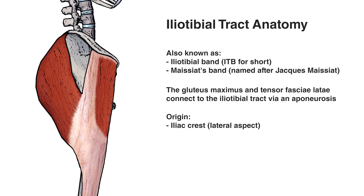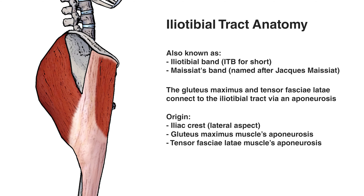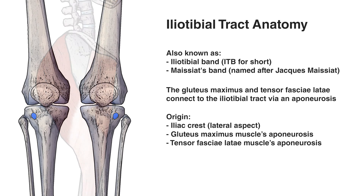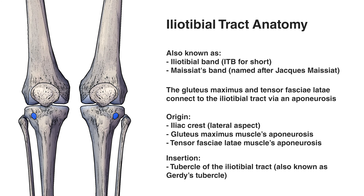In addition to the iliac crest, the iliotibial band also connects to the gluteus maximus muscle and the tensor fasciae latae muscle via an aponeurosis, and this connection can also be classed as an origin point. Moving on to the insertion: you can see that marked out in blue on the lateral condyle of the tibia. This insertion is on the tubercle of the iliotibial tract, also known as Gerdy's tubercle — a small bony bump located in that area marked in blue.